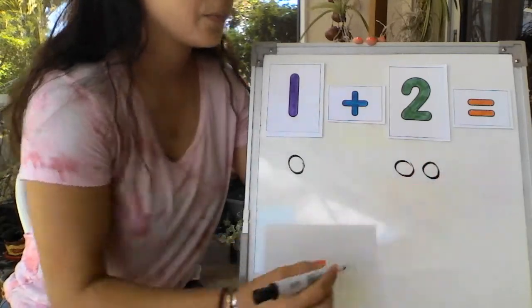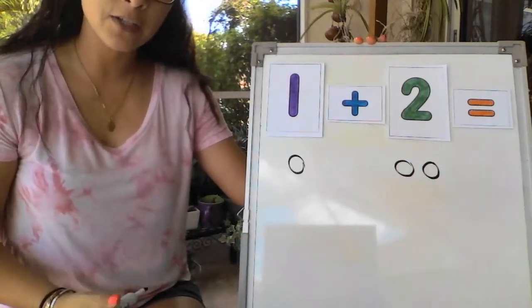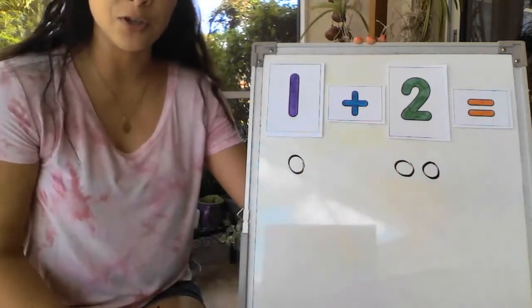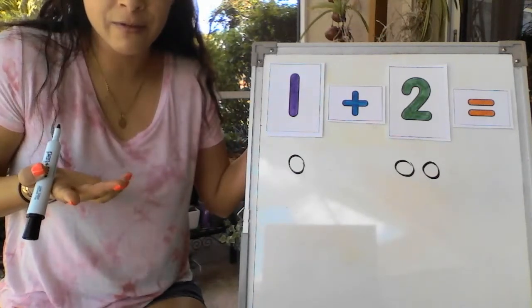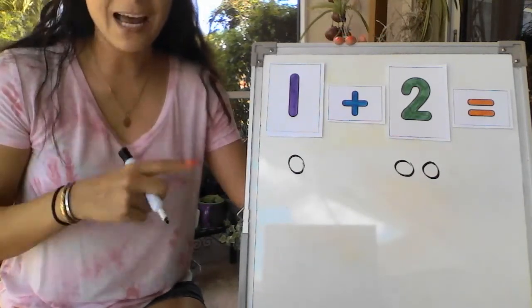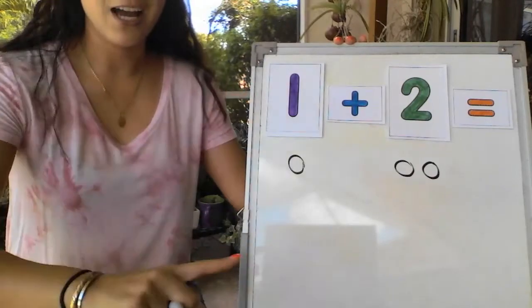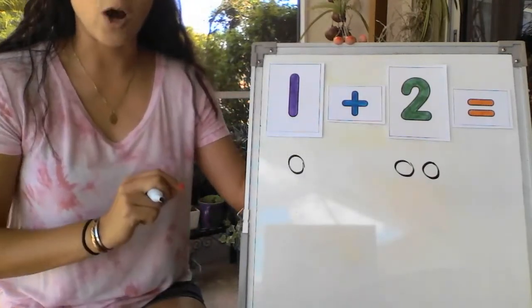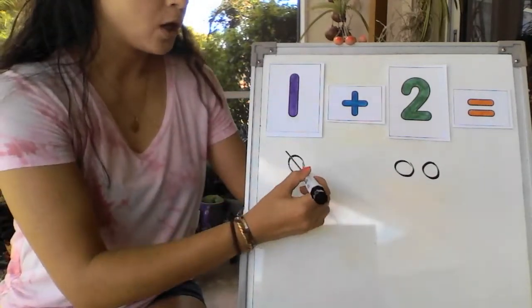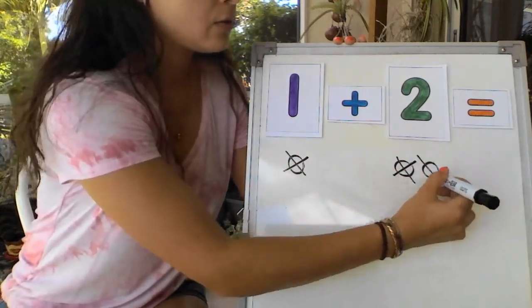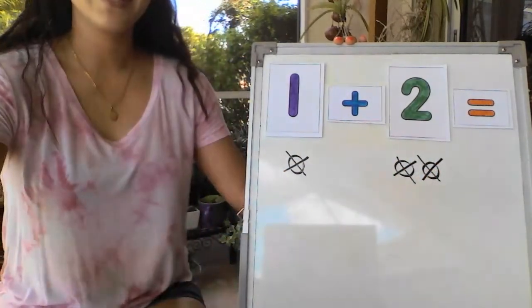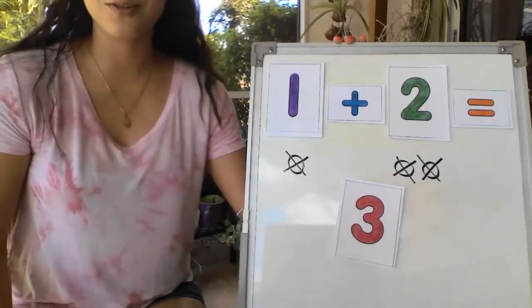1, 2. Now just like we would with our fingers we're going to count all of the circles to see how many we have. What I like to do is after I finish counting a circle I exit out. Watch. 1, 2, 3. Looks like 1 plus 2 is still 3.